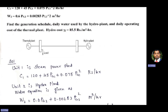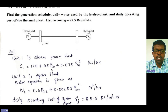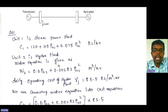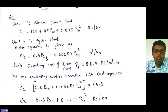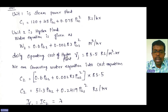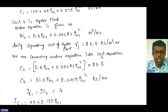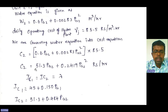Solution: Unit 1 is the steam power plant — C1 = 120 + 45·PG1 + 0.075·PG1² rupees per hour. Unit 2 is the hydro power plant — water equation W2 = 0.6·PG2 + 0.00283·PG2² meter cube per hour. The daily operating cost of the hydro plant (γ) is given as 85.5 rupees per meter cube per hour. We convert the water equation into a cost equation: C2 = 85.5 × W2 = 51.3·PG2 + 0.2419·PG2² rupees per hour.